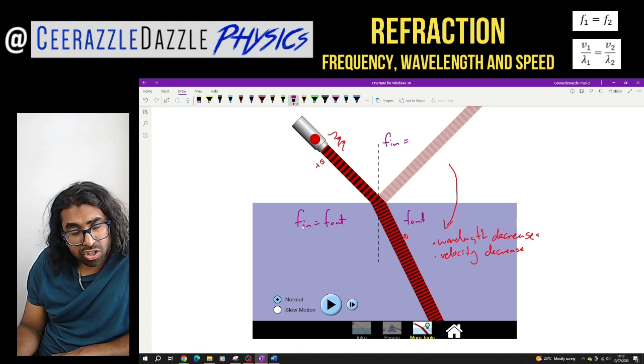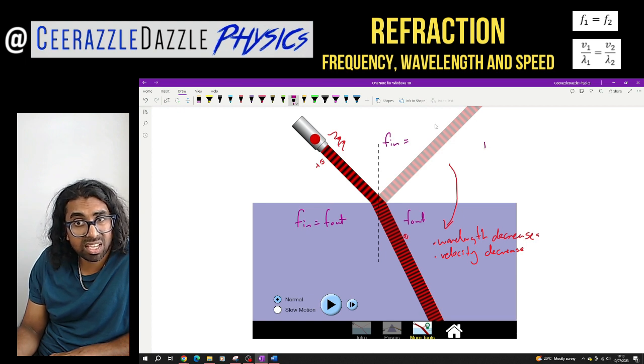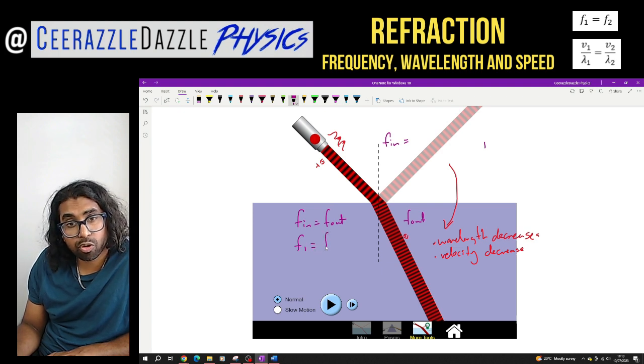We can also change this then rather than having f_in and f_out, we can say this is the first material. So obviously I'm traveling through the first material, so the frequency in the first material will be equal to the frequency in the second material over here.